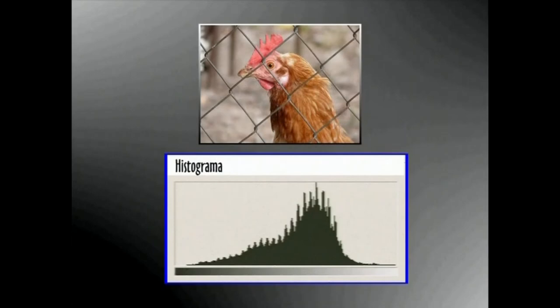Histograma batek argazkia egiteko erabilitako oinarrizko esposizioa esaten du. Beltza eskerrean dago, zuria eskuinean. Histograma bi muturren artean agertzen bada, argazkiak tonu guztiak jasotzen dituela esan nahi du. Argazkia esposizio zuzenez egin dela alegia.